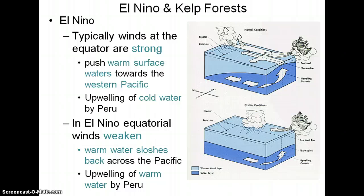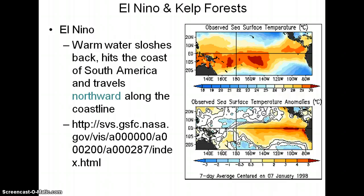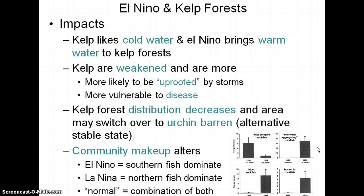That warm water then spreads up and down the coasts of Peru and North and South America, and when that happens you get problems for kelp. This picture shows you how typically the warm water sits over by Australia and the Indo-Pacific, and during El Niño all of that warm water comes back over by Peru and spreads up the coast. Kelp forests here suffer because they like cold water. The warm water weakens them, making them more likely to be uprooted by storms and more vulnerable to disease. So the distribution of kelp forests actually decreases in an El Niño year.